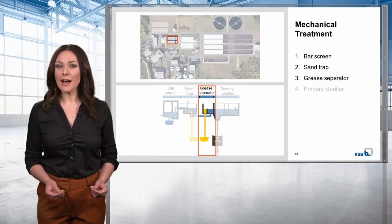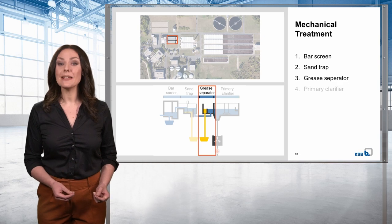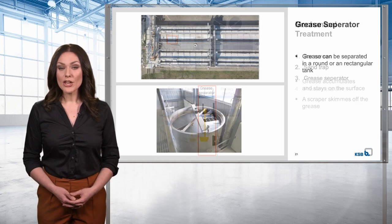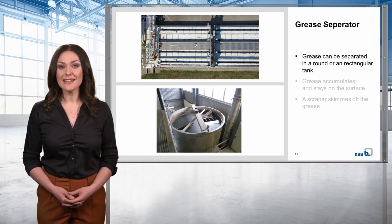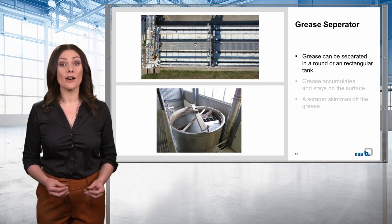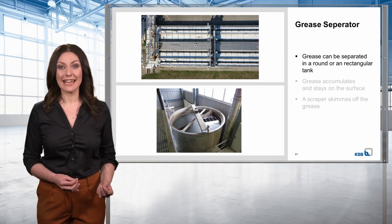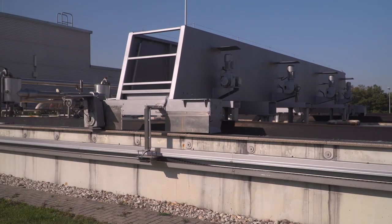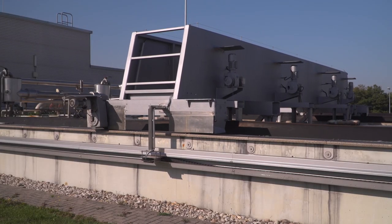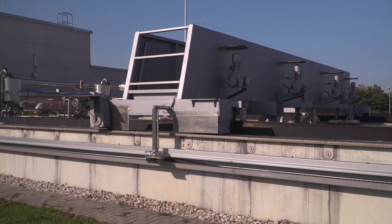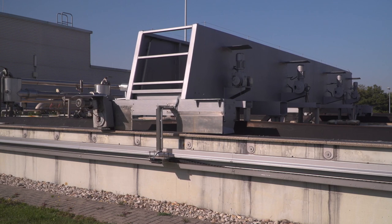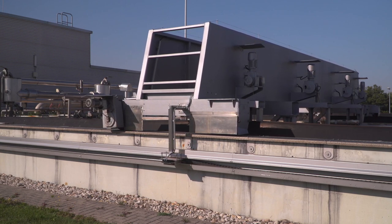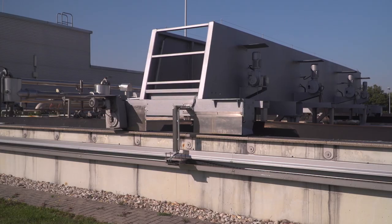The next step after the sand trap is the grease separator. Grease can be separated in either a round or a rectangular tank. The principle is the same for both designs: grease accumulates and stays on the surface, from where it is later skimmed off with a scraper.